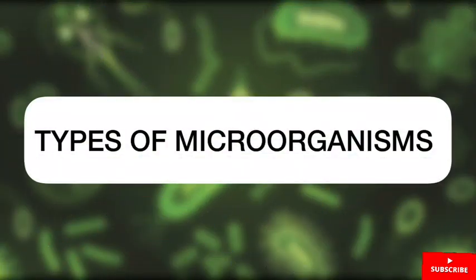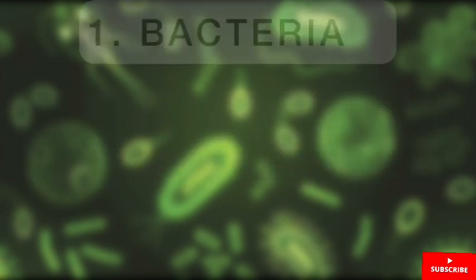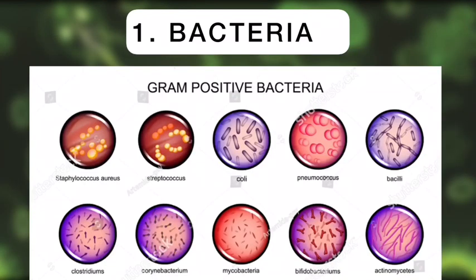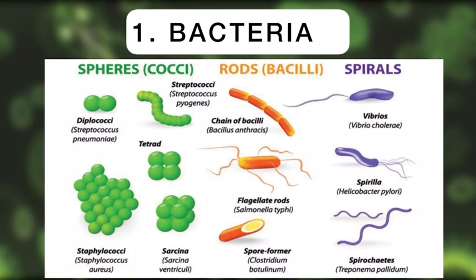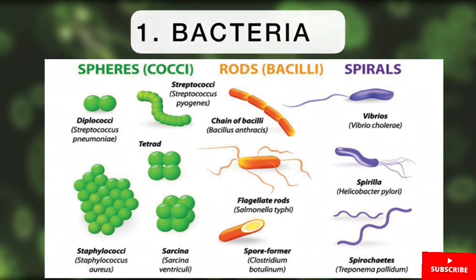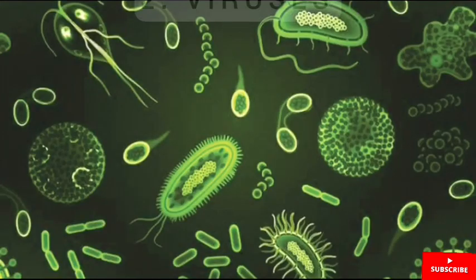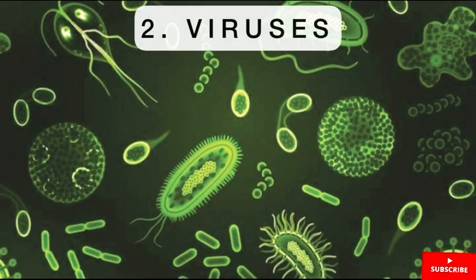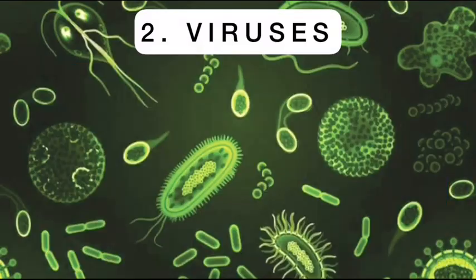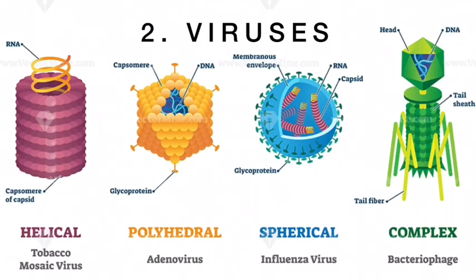Let's take a look at the various types of microorganisms. Firstly, we take a look at the bacterial cells, which can exist either as gram-negative or gram-positive bacteria. We can see the shapes of various bacteria which exist as forms — that is the cocci, the bacillus, and the spirals. Secondly, we have the viruses, which exist in four main shapes: the helical, the polyhedral, the spherical shape, and the complex shape.